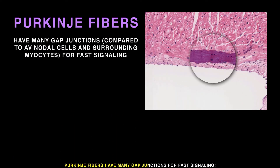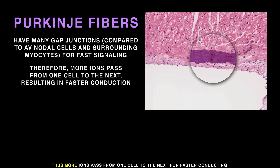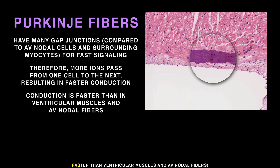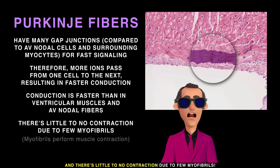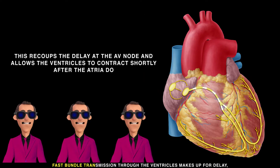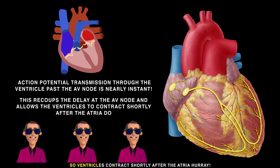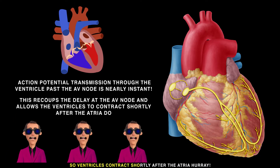Purkinje fibers have many gap junctions for fast signaling — more ions pass from one cell to the next, enabling faster conduction than ventricular muscles and AV nodal fibers. There is little to no contraction due to few myofibrils. This fast bundle transmission through the ventricles compensates for the AV node delay, so the ventricles contract shortly after the atria.